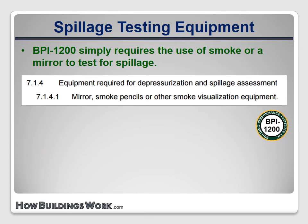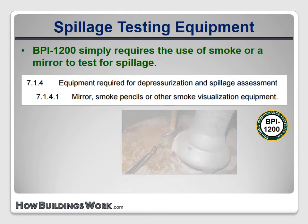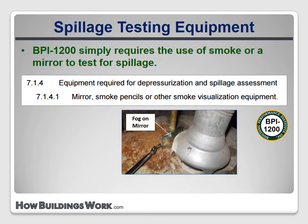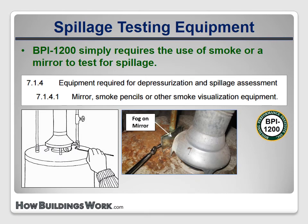BPI 1200 includes a very simple statement about equipment used to test spillage. It must include a mirror, smoke pencils, or other smoke visualization equipment, like a smoke puffer, a water-based smoke generator, or an incense stick.